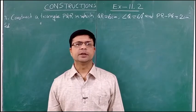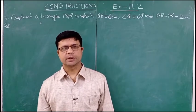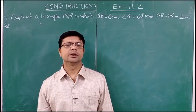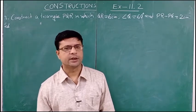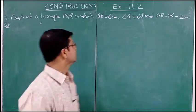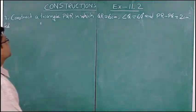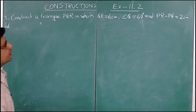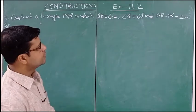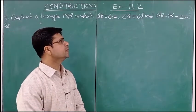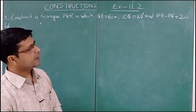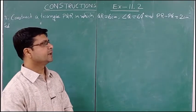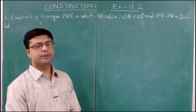Dear students, we are in the chapter Constructions, Exercise 11.2, question number 3. Let us read the question: construct a triangle PQR in which QR equal to 6 centimeter, angle Q equal to 60 degree, and PR minus PQ is 2 centimeter.